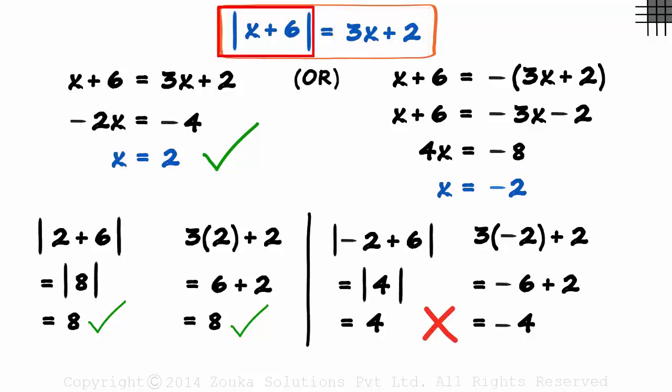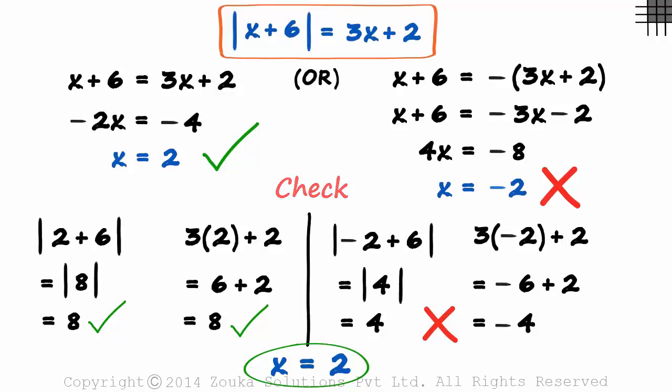Here, the left hand side is not equal to the right hand side. So, x equal to minus 2 is not a solution to this equation. X equal to 2 is the only correct solution and not this one. Good! Now you know why I ask you to check your answer in absolute value questions.